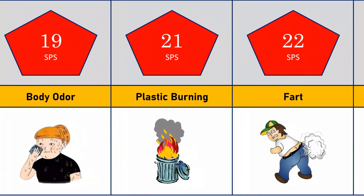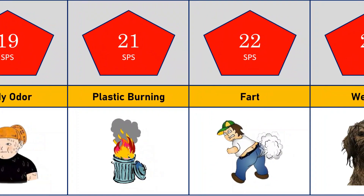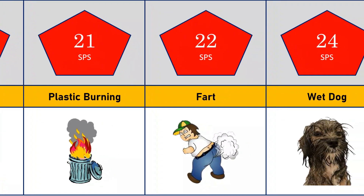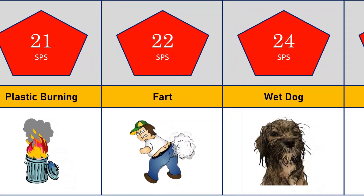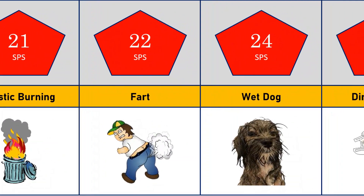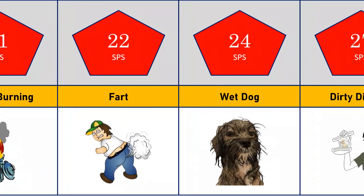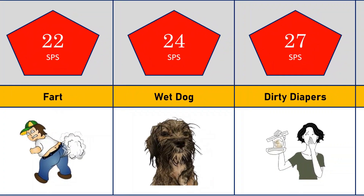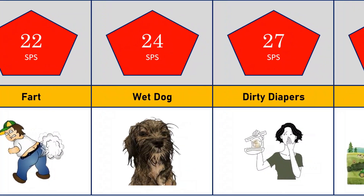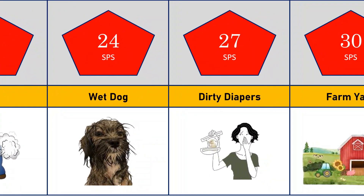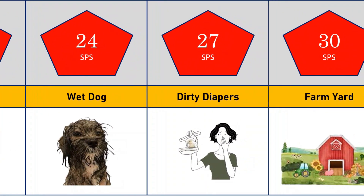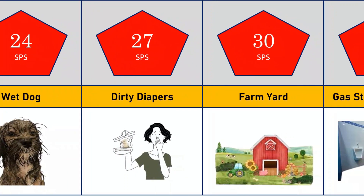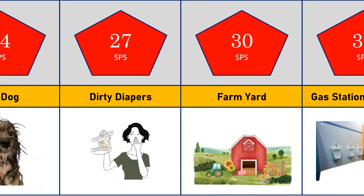Smell of fart: 22 SPS. Smell of wet dog: 24 SPS. Smell of dirty diapers: 27 SPS. Smell of farmyard: 30 SPS.